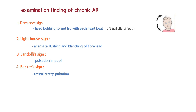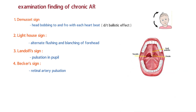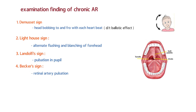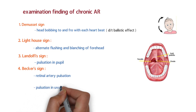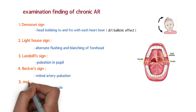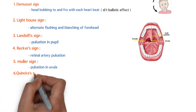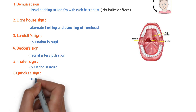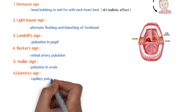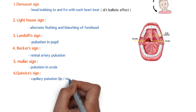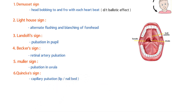In the mouth, we have Müller's sign, where there is pulsation of the uvula in severe aortic regurgitation. We also have Quincke's sign, in which there is capillary pulsation of the lips, which can also be seen in the nail beds. So in the mouth we have two signs: Müller's sign and Quincke's sign.